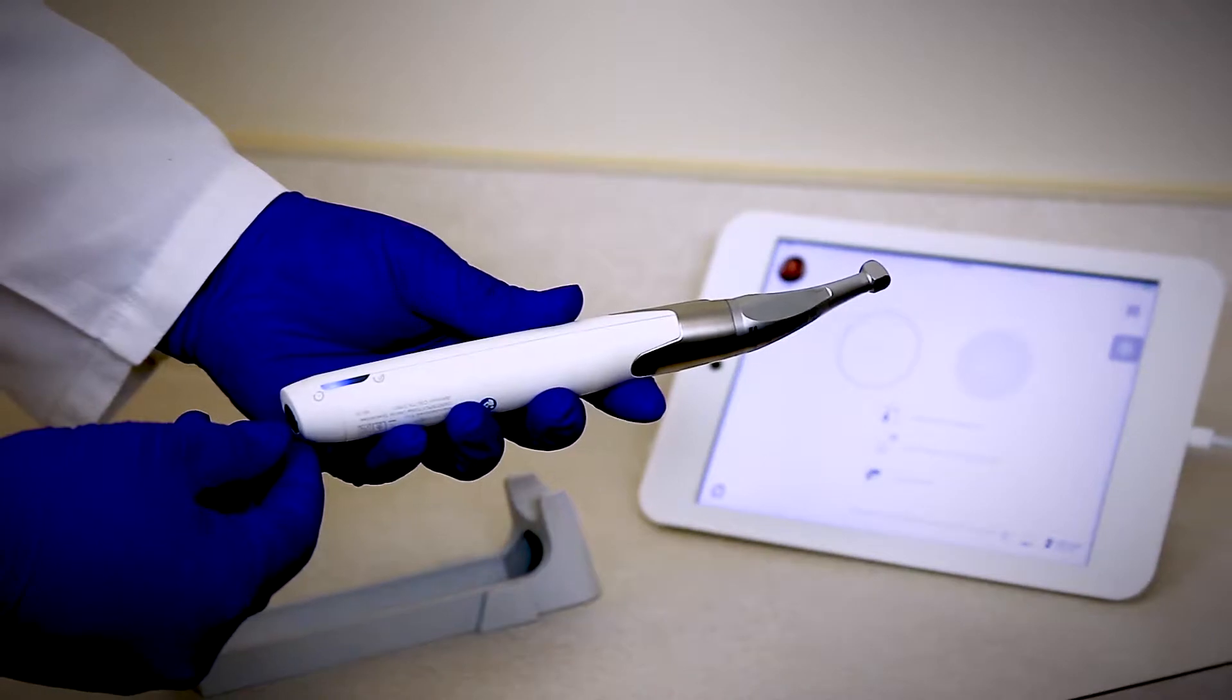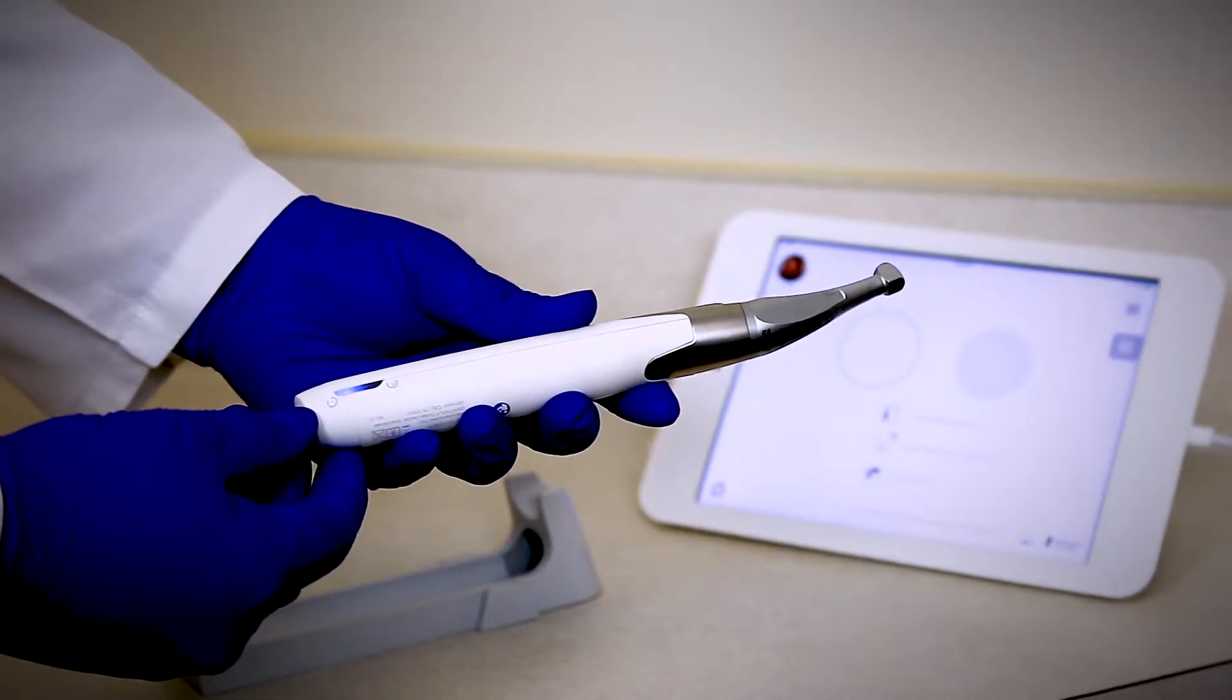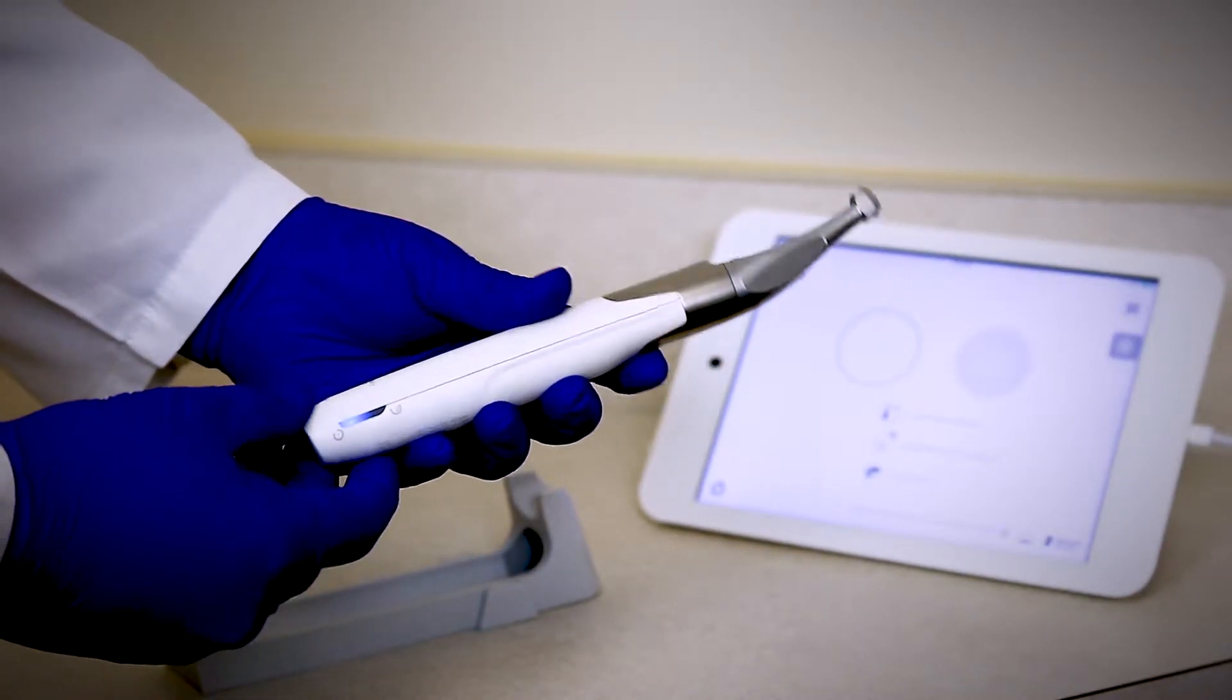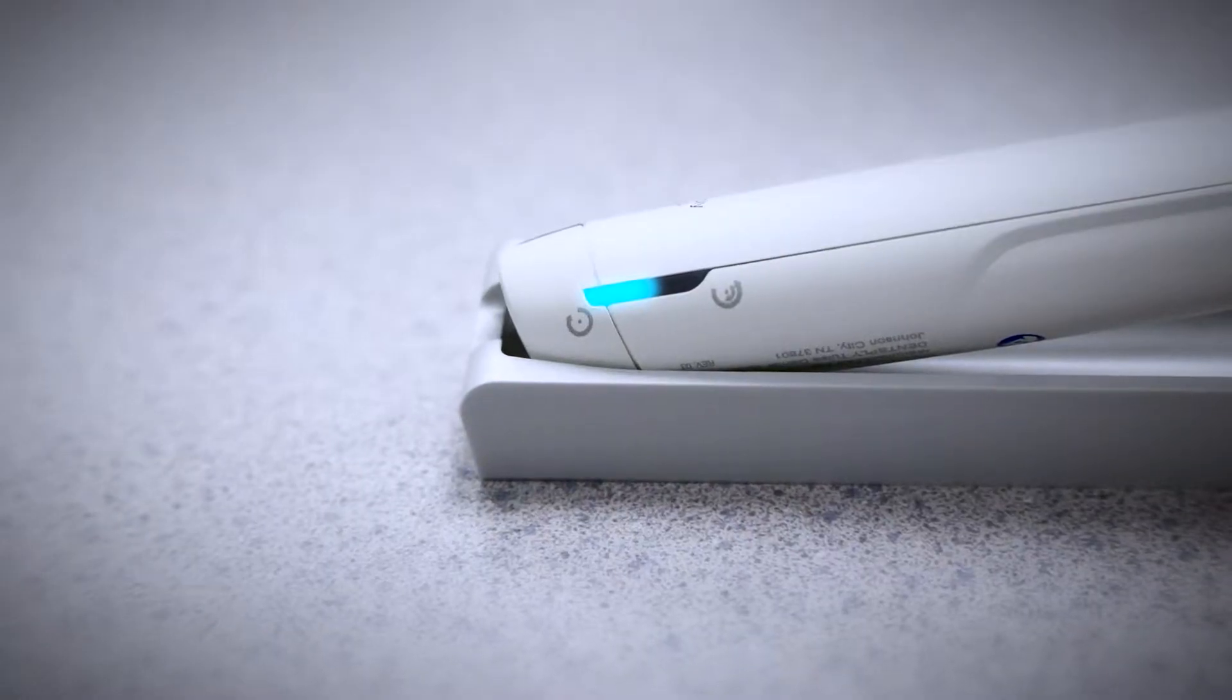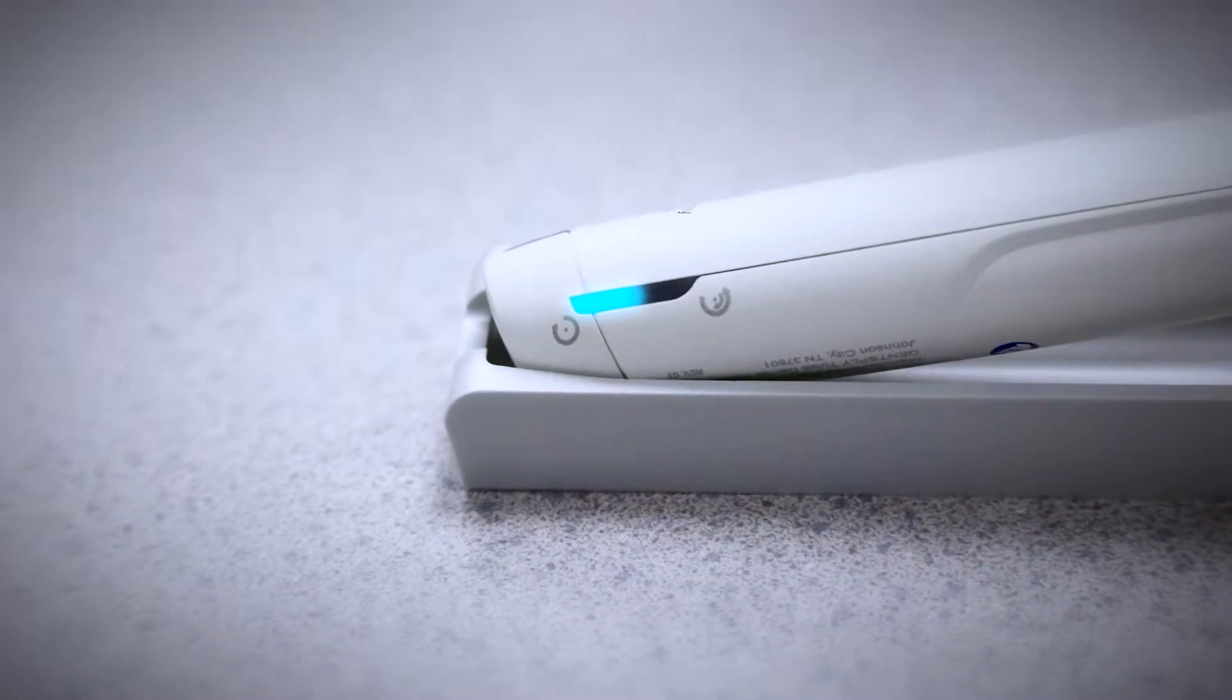On the other side you'll have the icon representing reciprocating motion and continuous motion. A blue light will appear next to what motion is being used.